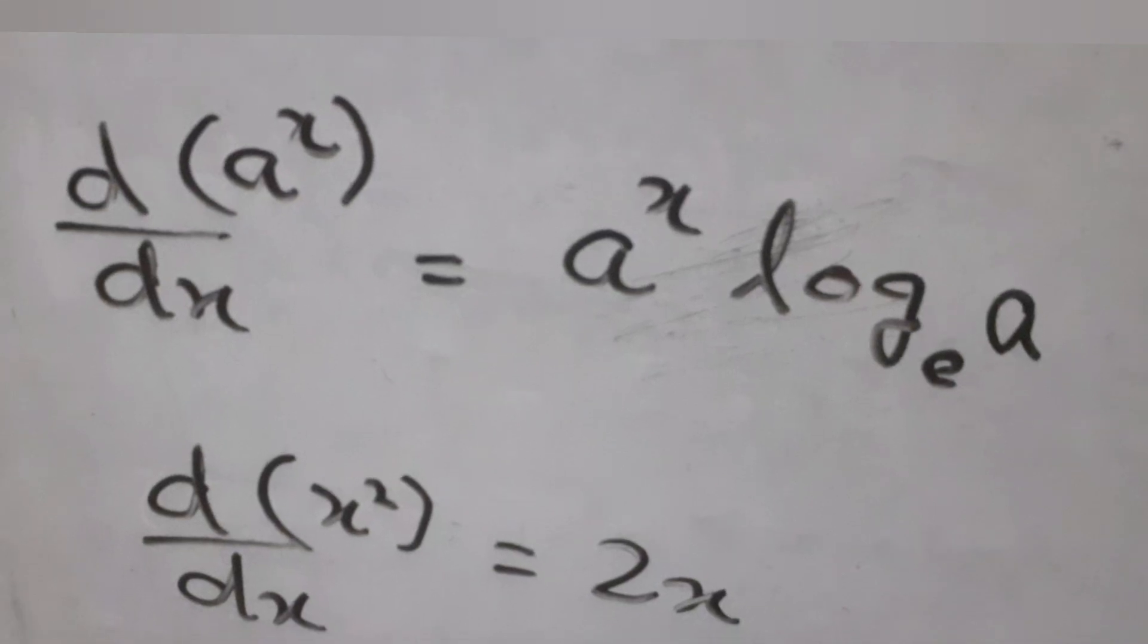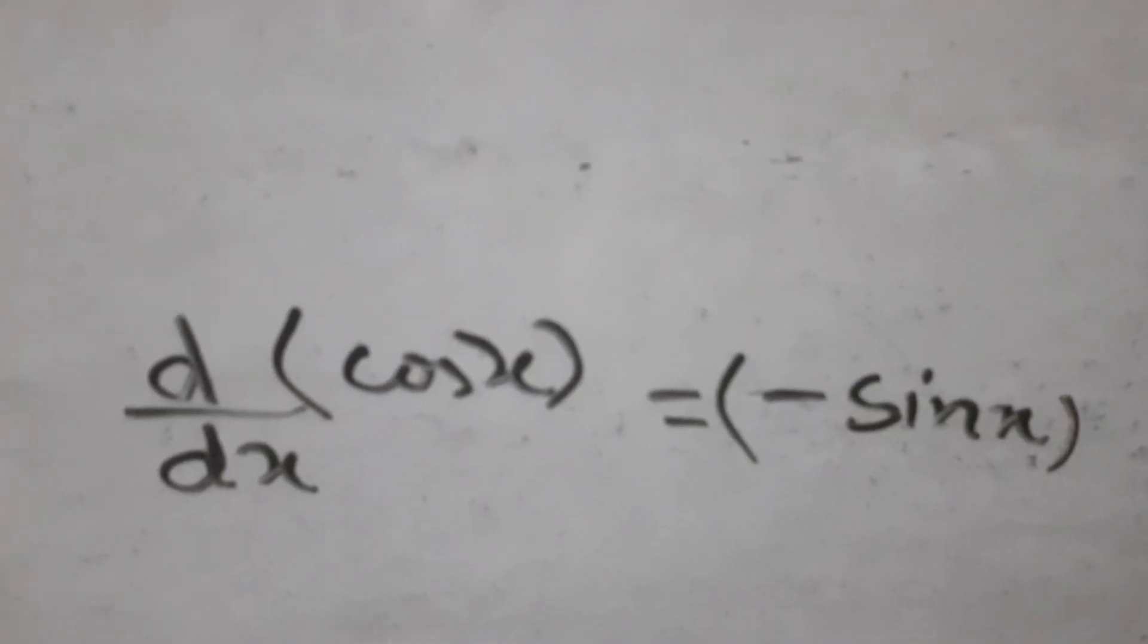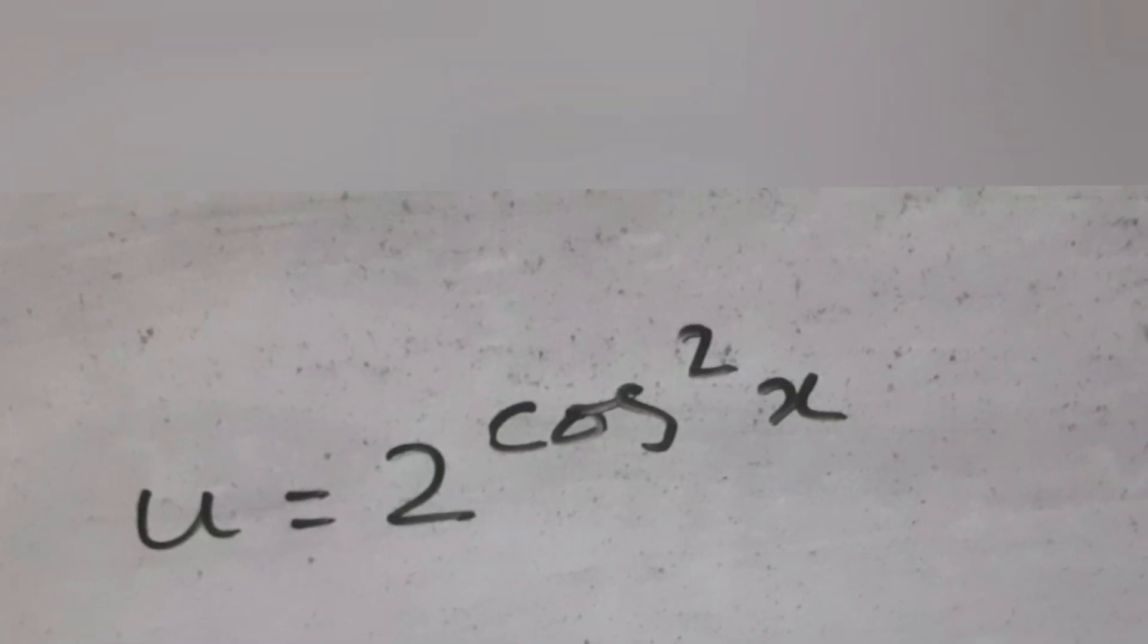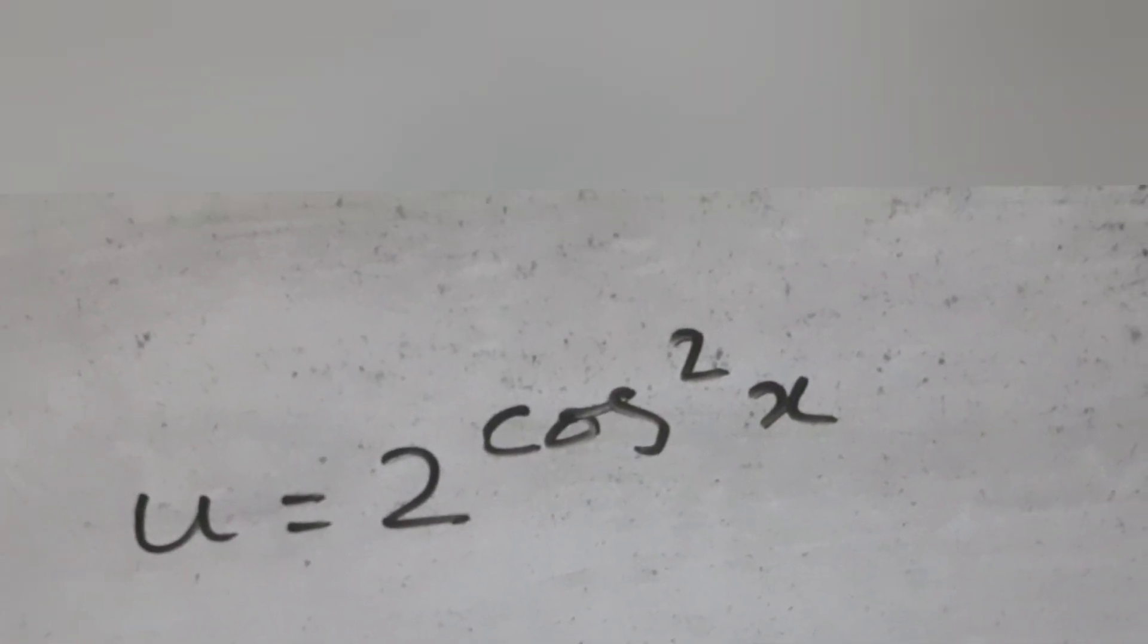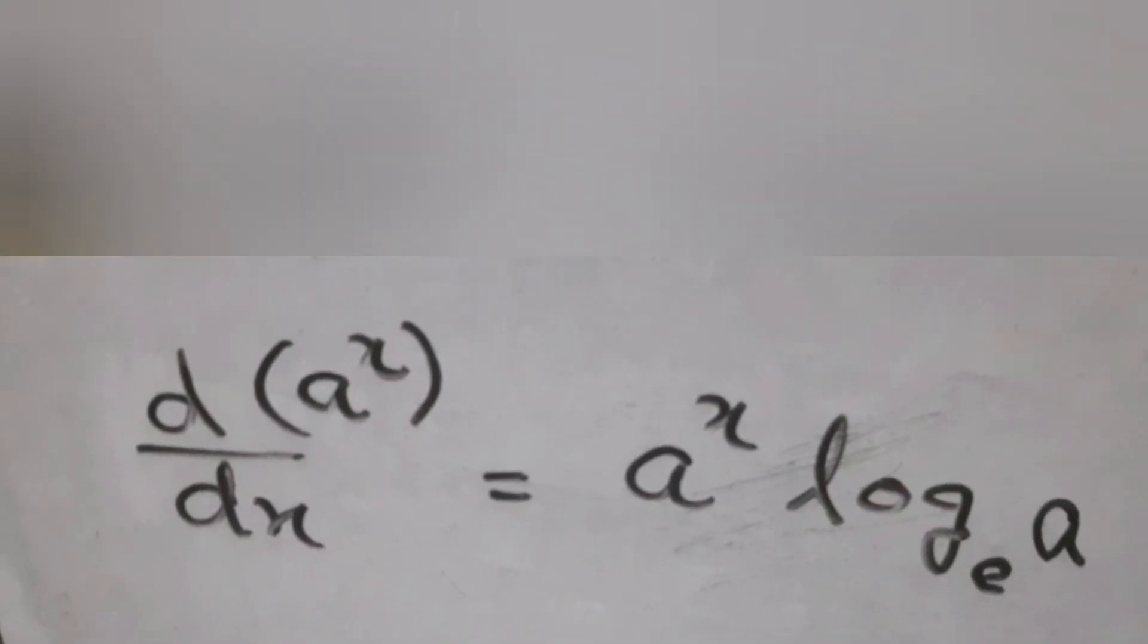The derivative of x square is 2x. Derivative of cos x is minus sin x. Treating 2 power cos square x as a composition of the functions.